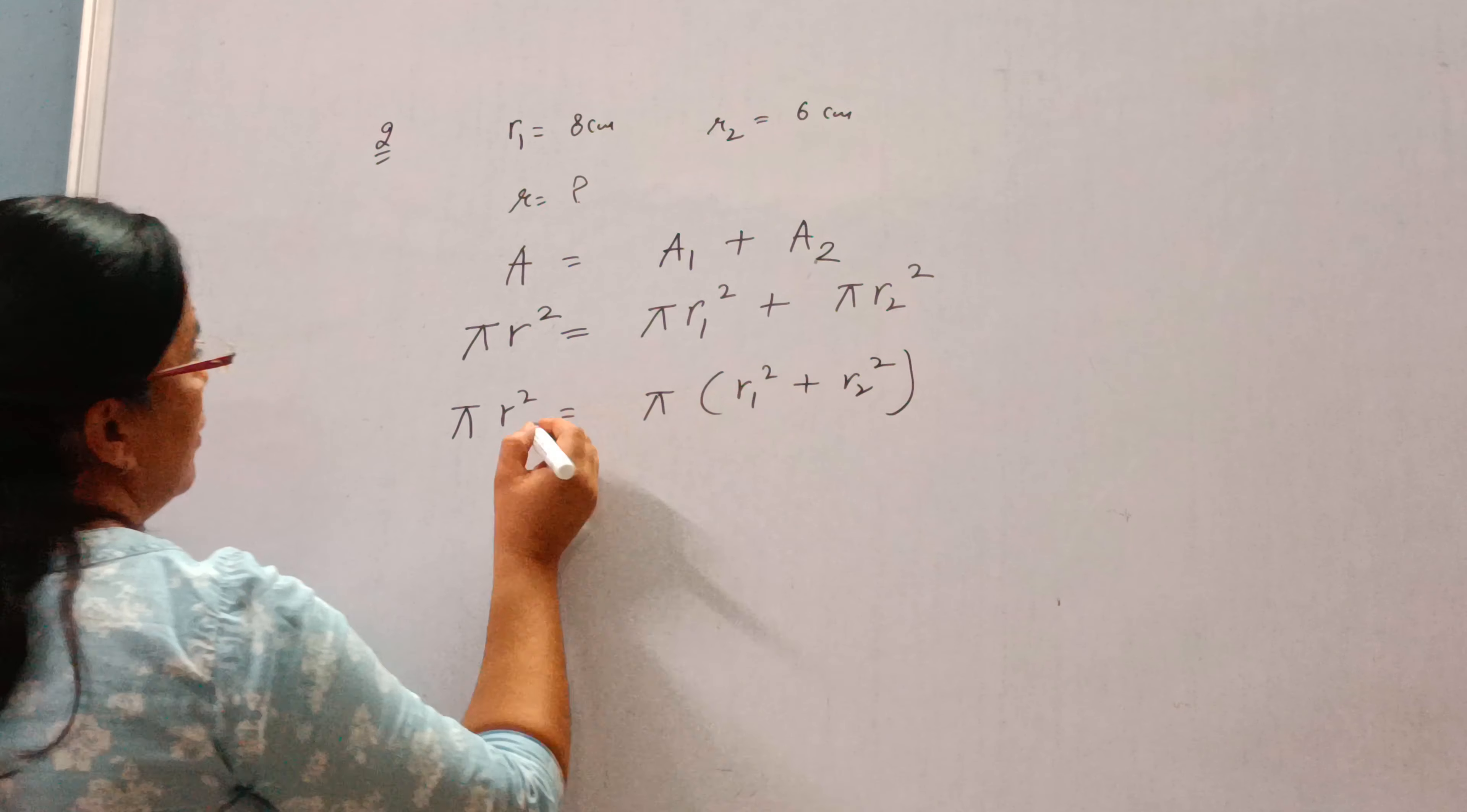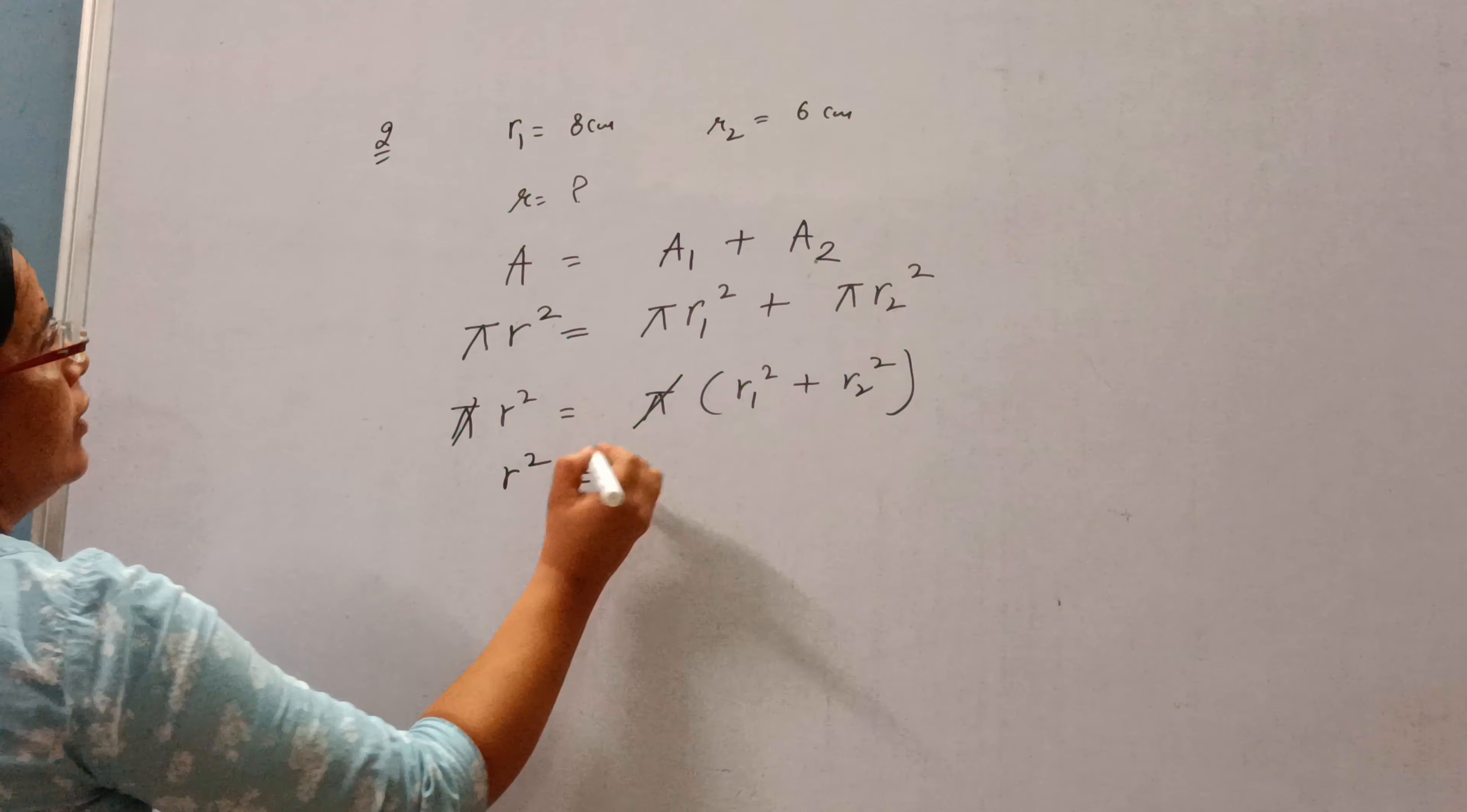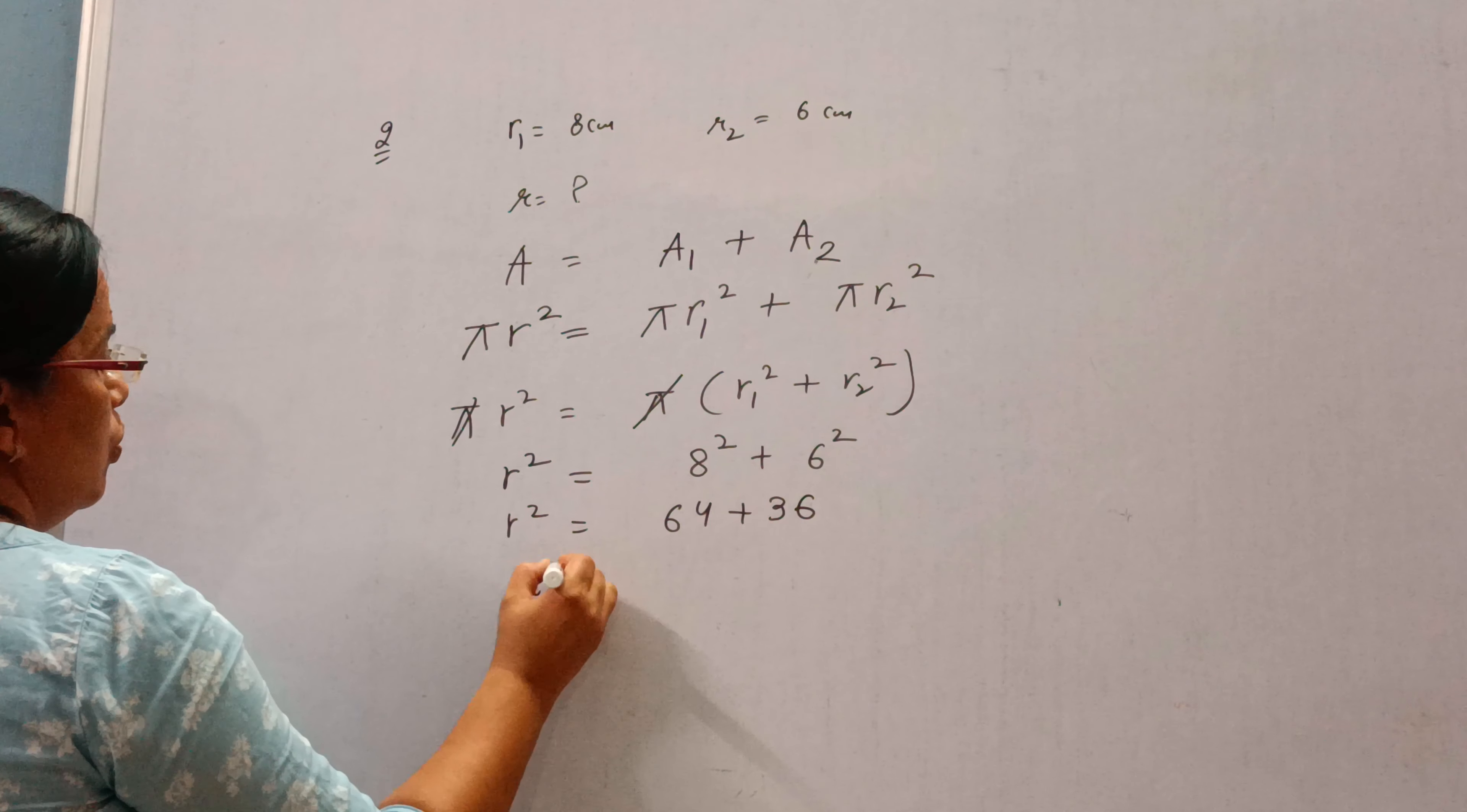Now, take out pi as common, this will be R1 square plus R2 square. We can cancel pi, so R square is equal to square of 8 and square of 6.